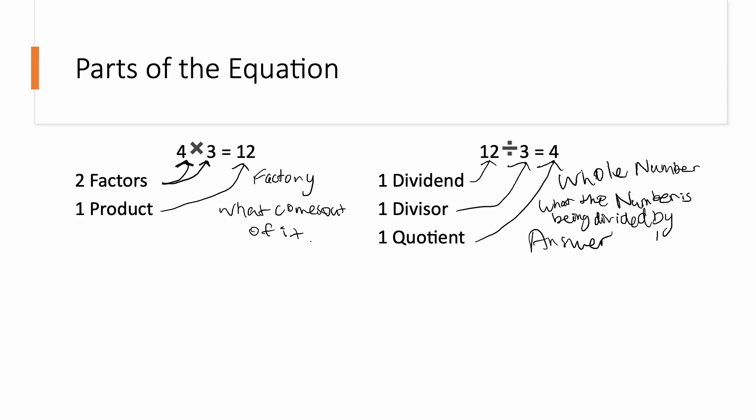In the multiplication equation, the first two numbers are factors. Think of it like the factory. And the last number, which is what comes out of the factory, is the product.